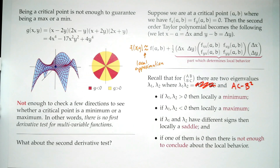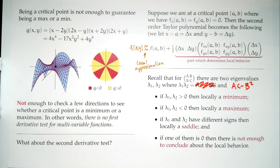If the product λ₁·λ₂ is positive, we're locally a min or max depending on whether they're both positive or both negative. If they have different signs — λ₁·λ₂ is negative — we're locally a saddle. If the value is zero, we say inconclusive and stop; we're not going further after that.